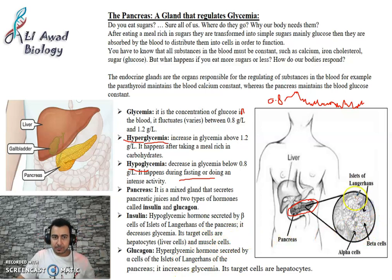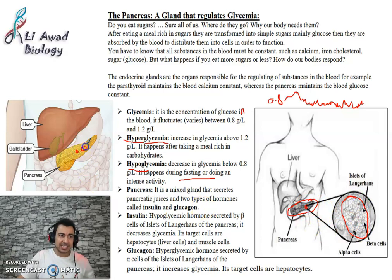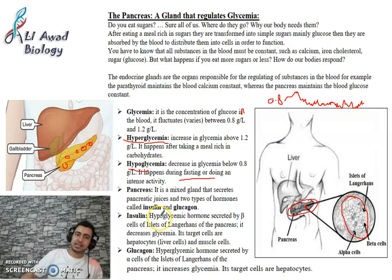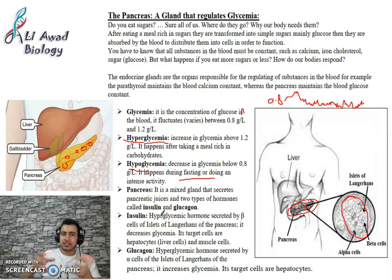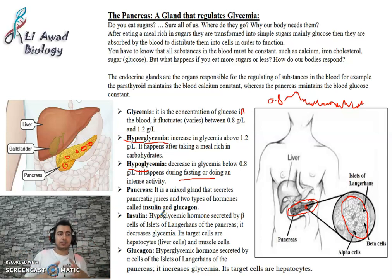The Islets of Langerhans are small scattered regions within the pancreas. The name comes from Paul Langerhans, who was the first to describe them. 'Islets' is like 'islands' — they are isolated regions scattered throughout the pancreatic tissue.